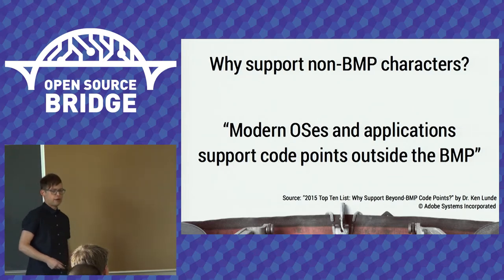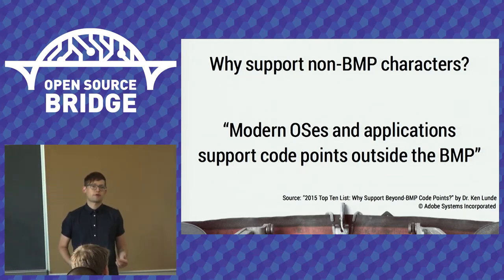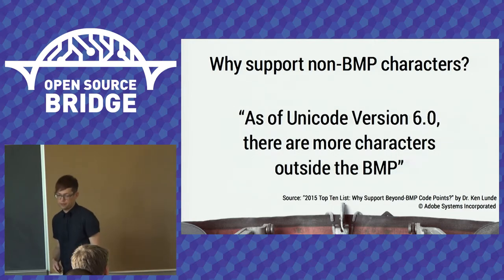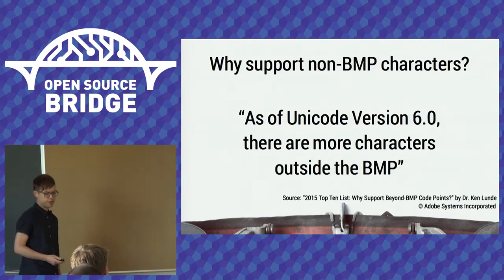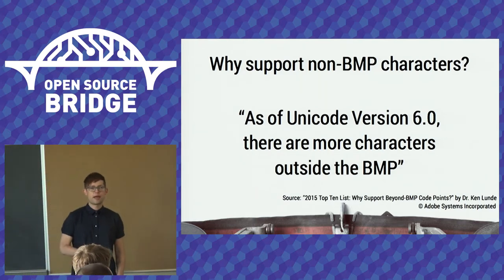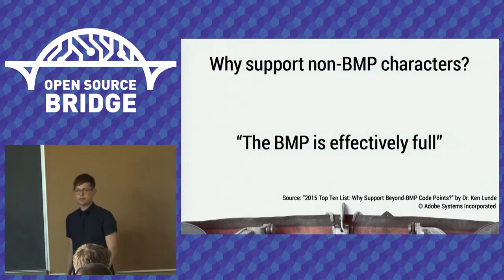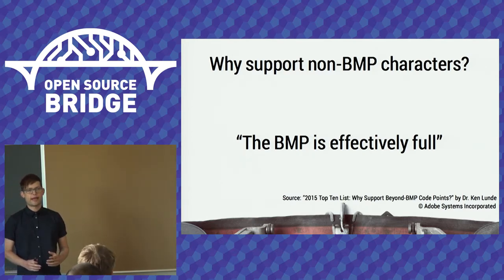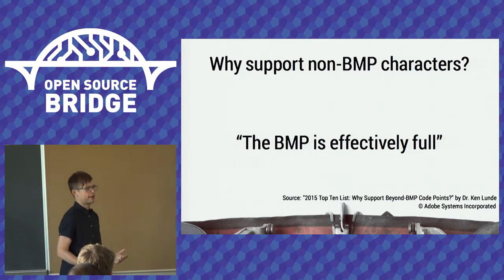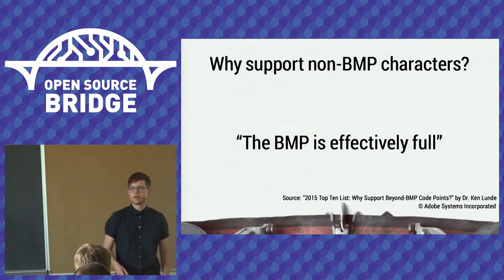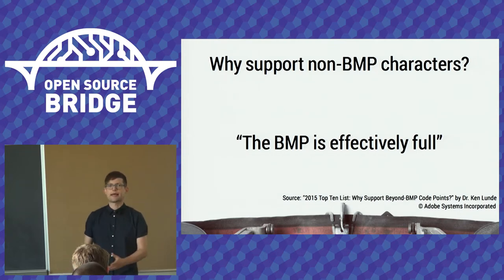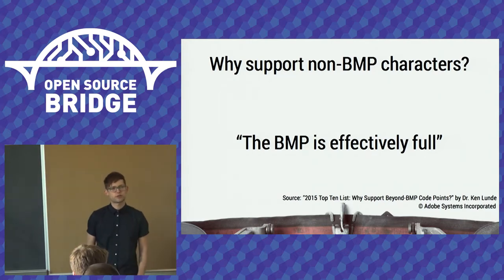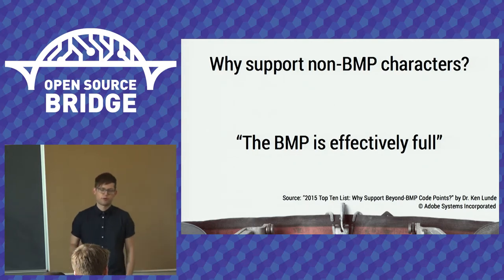Modern operating systems and applications already support non-BMP characters, so users are going to be inputting them. As of Unicode 6.0, there are more characters outside the BMP than in it. The BMP is effectively full — we're not adding new blocks into the BMP. If we wanted to add more Thai characters, for example, we would have to create a Thai extension block outside of the BMP. As we add more characters, it's just growing outside the BMP, and supporting these should be considered a business and personal priority.